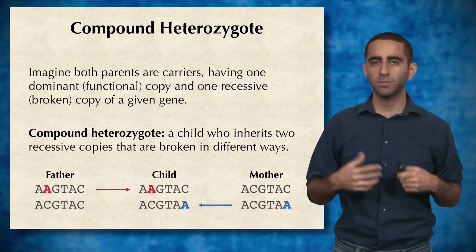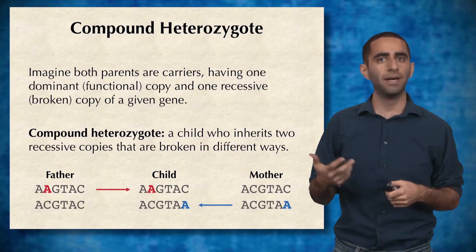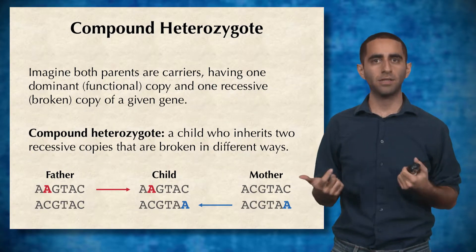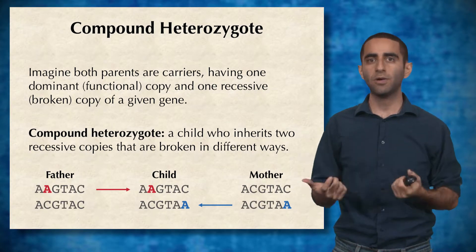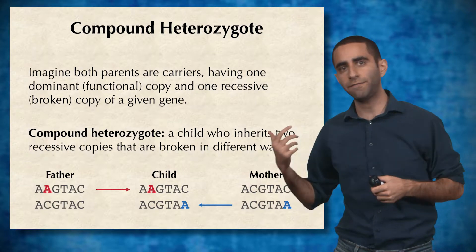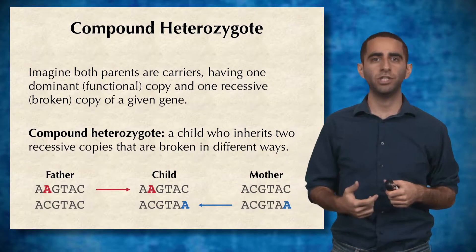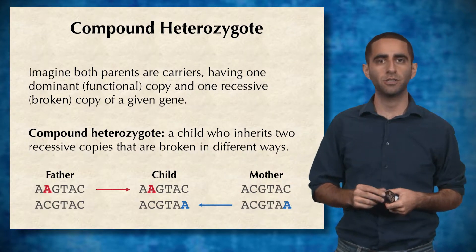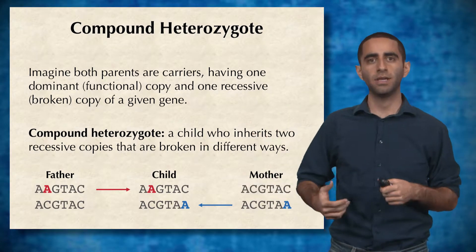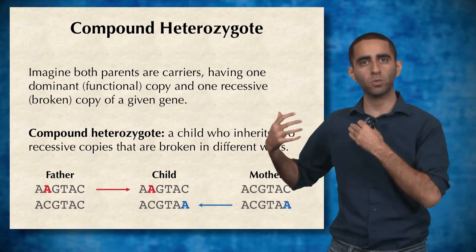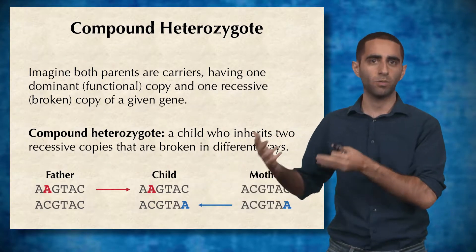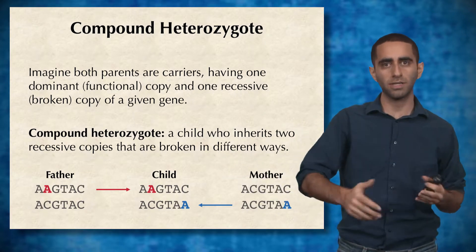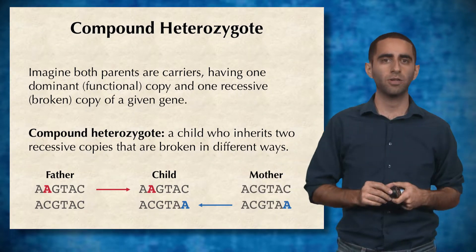So some definitions. First, we want to talk about compound heterozygotes. Imagine both parents are carriers for some disease — in other words, they have one functional copy of a gene and one recessive broken copy of the gene. So with their dominant functional copy, they display the regular healthy phenotype and regular healthy characteristics, whereas this recessive broken copy just kind of hides away in the background.